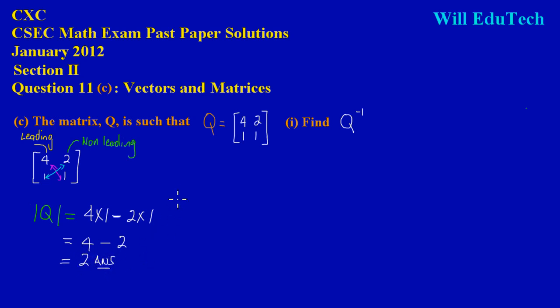For the determinant. Now the next thing that we'll have to do is to find the adjoint. So here we are going to simply find the adjoint of the matrix Q.